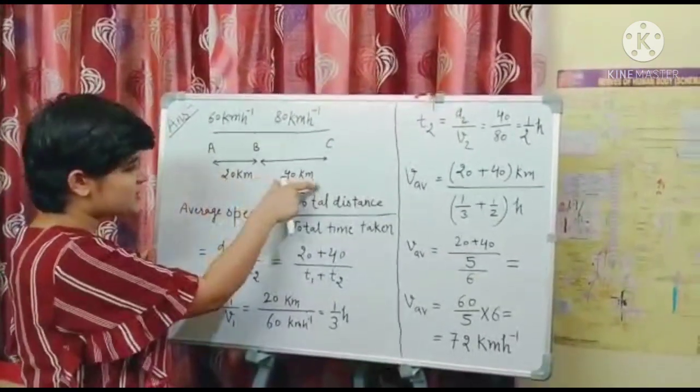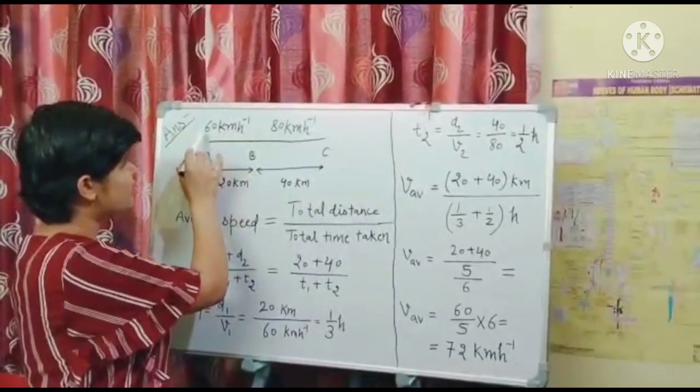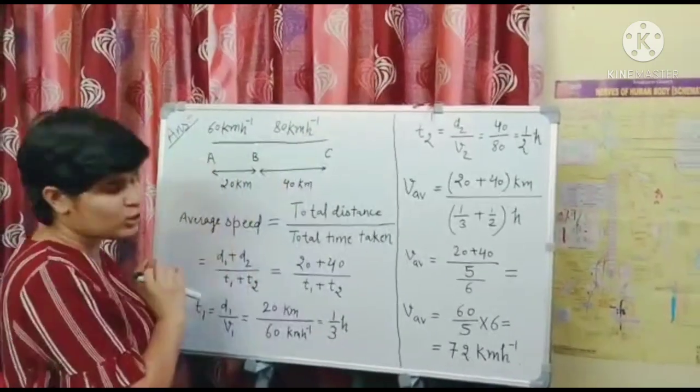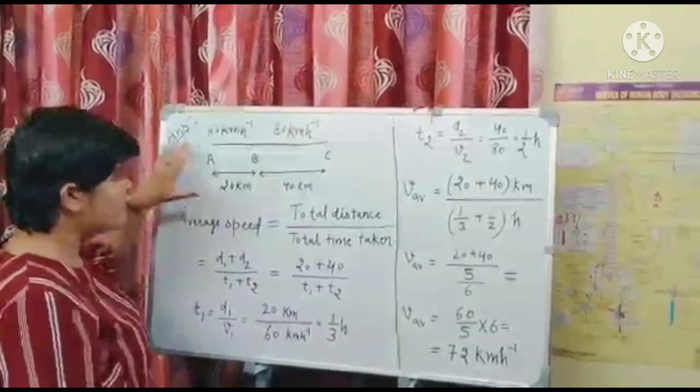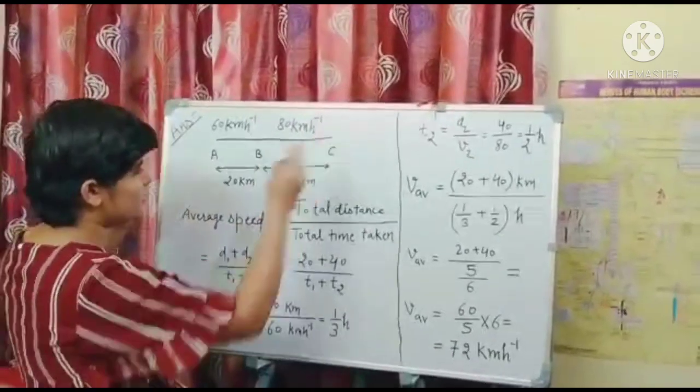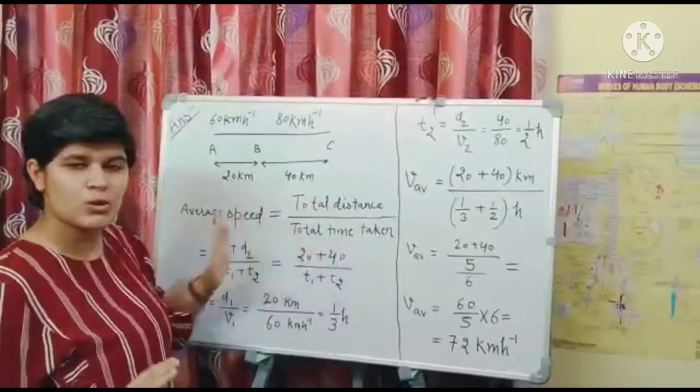Now to travel these distances, the train travels with different velocities. Which is V1 is equal to 60 km per hour and V2 is equal to 80 km per hour. Now we have to calculate the average speed of this train, of this total distance. So the formula of average speed is total distance upon total time taken.